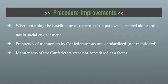For procedure improvements: when obtaining the baseline measurement, participants were observed alone and not necessarily in a social environment, which means that in a social environment they could have displayed different mannerisms than if they were just by themselves. Also, the frequency of the mannerisms by the confederate was not mentioned or reported, and depending on how many times the mannerisms were performed, that could affect the mannerisms of the subject itself. Additionally, mannerisms of the confederate were not considered as a factor if they had any other mannerisms not necessarily part of the experiment.